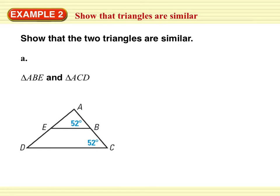Example 2. Show that the two triangles are similar. So I have triangle ABE and triangle ACD. We do know that this angle and this angle are congruent, so let's state that.